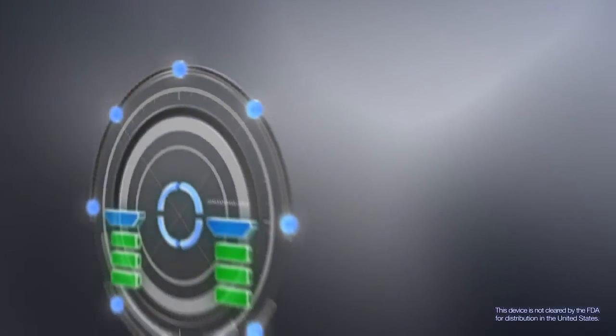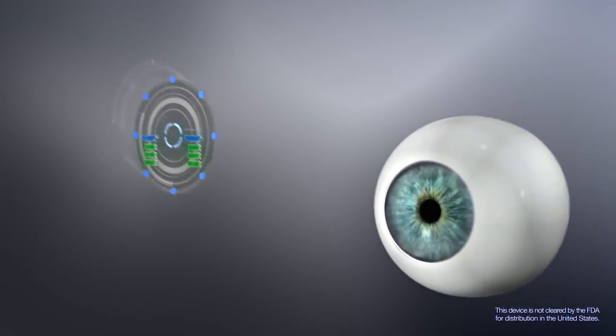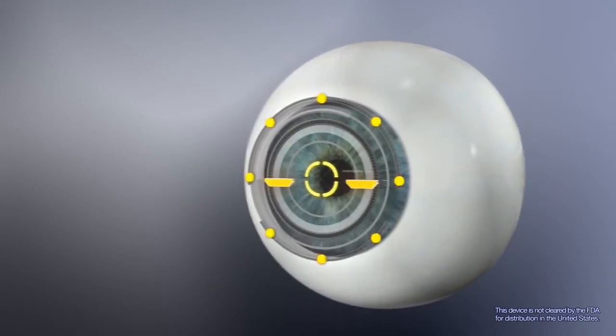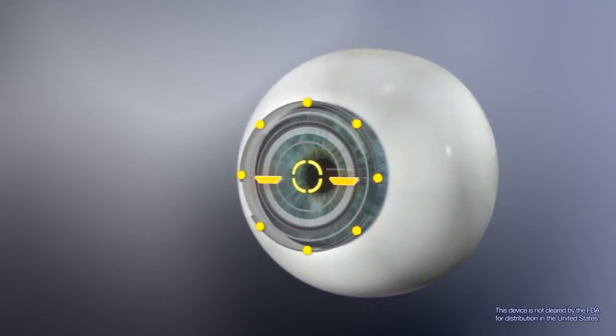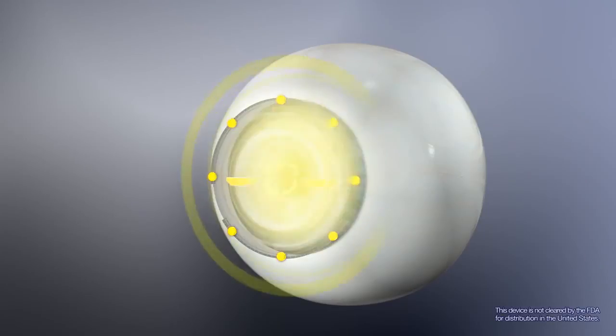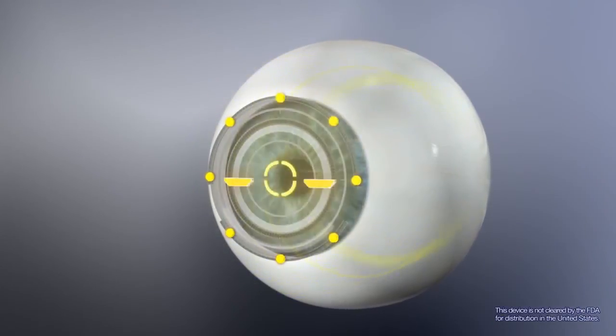The speed of the AL-Scan is made possible by 3D auto-tracking, which follows patient movements on the X, Y, and Z axis. As soon as the auto-tracker obtains correct alignment, the auto-shot function immediately begins capturing patient data.